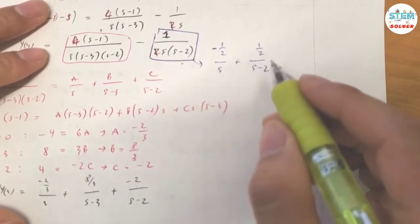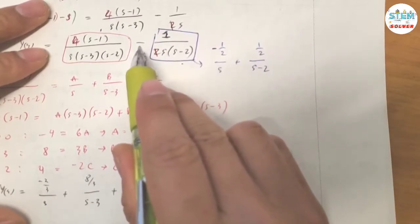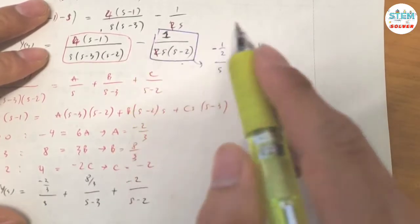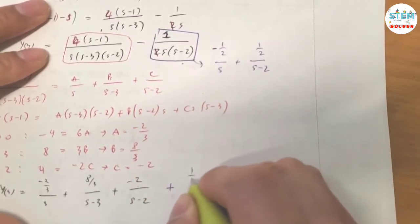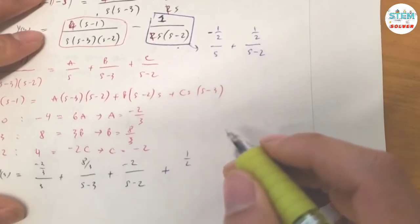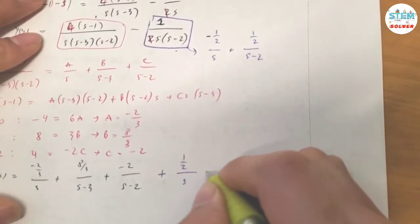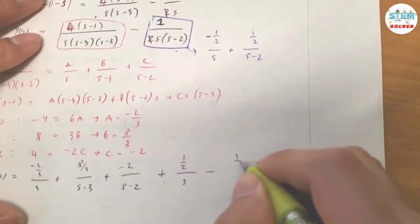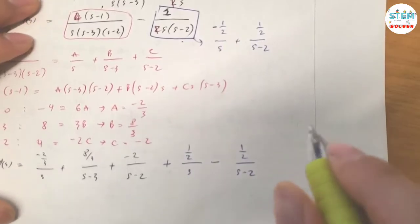This gives the partial fractions for this term. Don't forget to distribute the negative outside, so we get positive one-half over S minus one-half over (S minus 2).